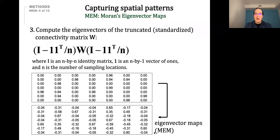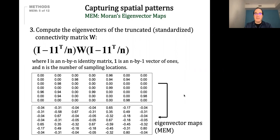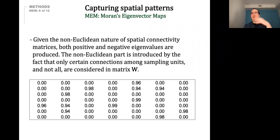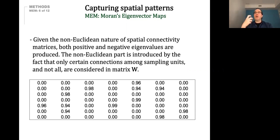We use those eigenvector maps in any statistical modeling framework. There are two types of general spatial patterns: positive autocorrelation, when sites or individuals tend to be more similar in space than expected by chance, and negative autocorrelation, when observation units tend to be more different when they're closer in space.